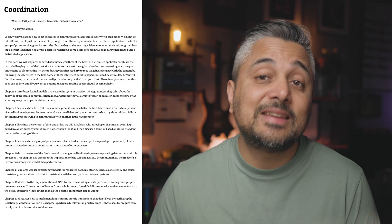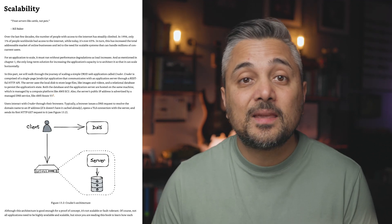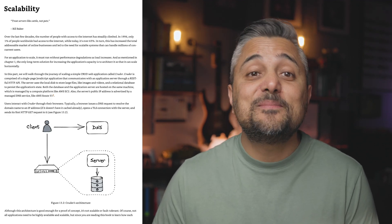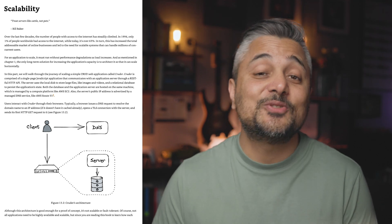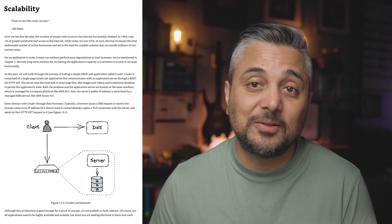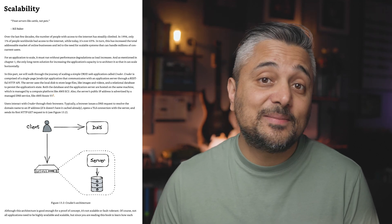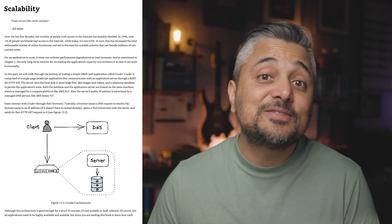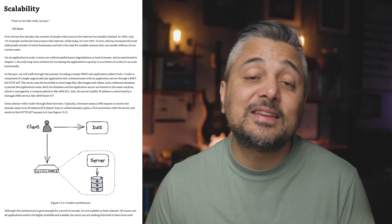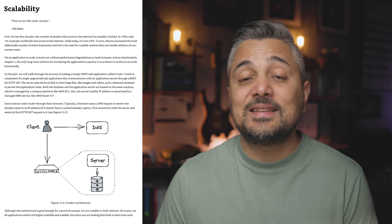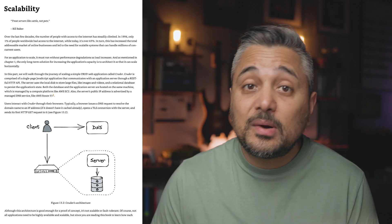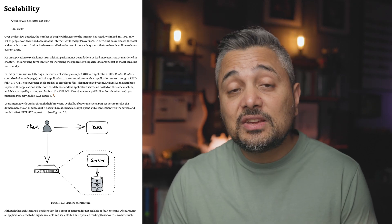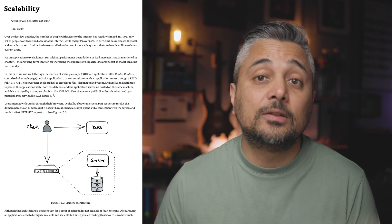This builds to the third part of the book: scalability. This is arguably the most important part of building a distributed system — to handle scale. In this section, the author talks about patterns to achieving scalability, things like microservices, APIs, messaging, partitioning, replication, caching, and load balancing.